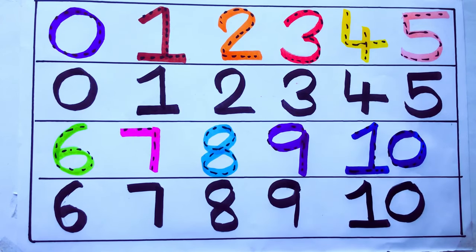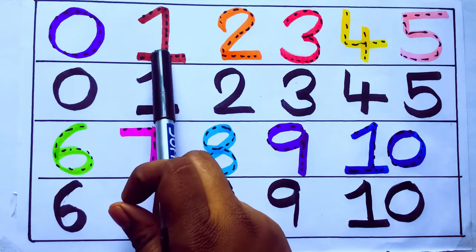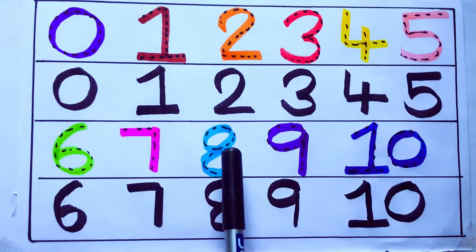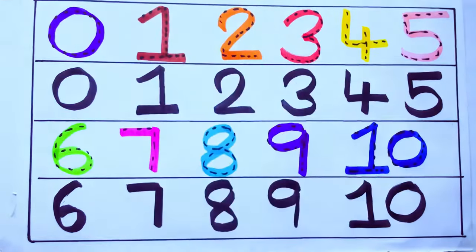Let's review learning numbers. 0, 1, 2, 3, 4, 5, 6, 7, 8, 9, 10. Okay, bye kids.